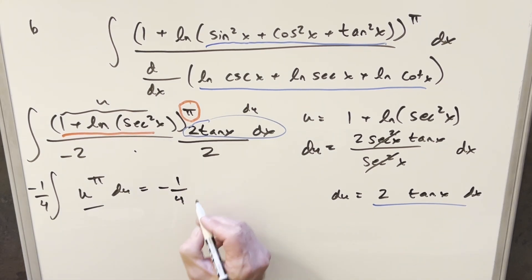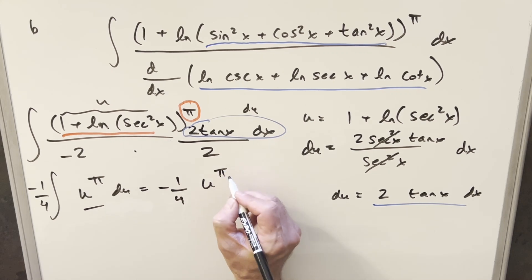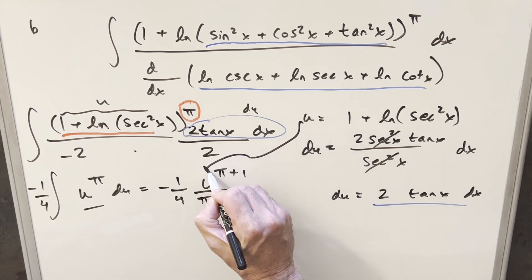So going ahead, we're going to have minus 1 over 4. Integrating here, this is going to become u to the pi plus 1 over pi plus 1. We just need to back substitute in order to finish it off here.